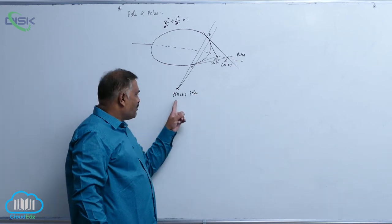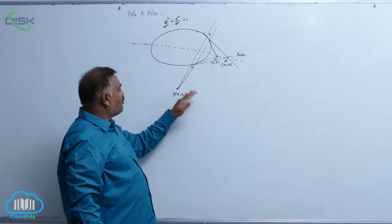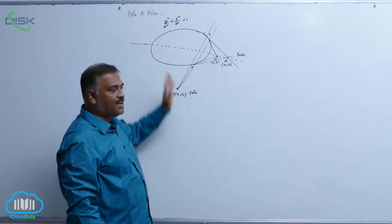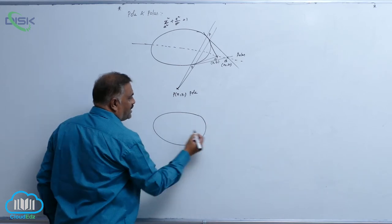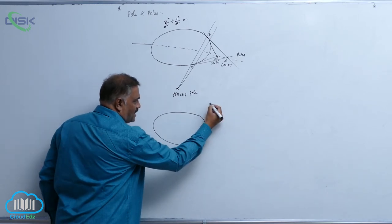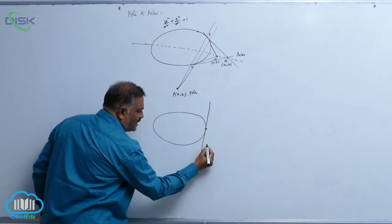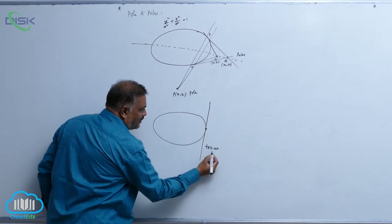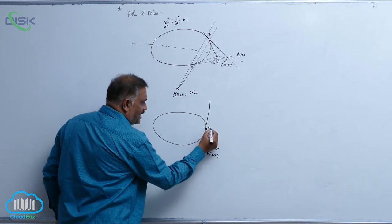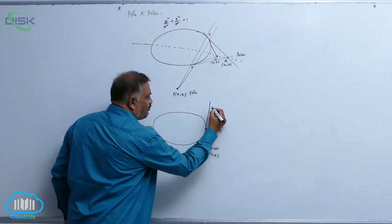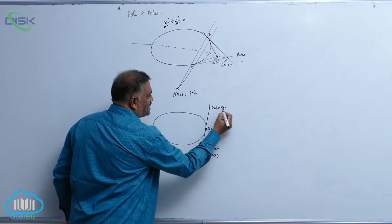We observe that when the point lies outside, polar lies inside. Suppose if you take ellipse equation like this and point is like this, it is coinciding with tangent at the point. Tangent at P(x1, y1) is same thing as polar of P(x1, y1).